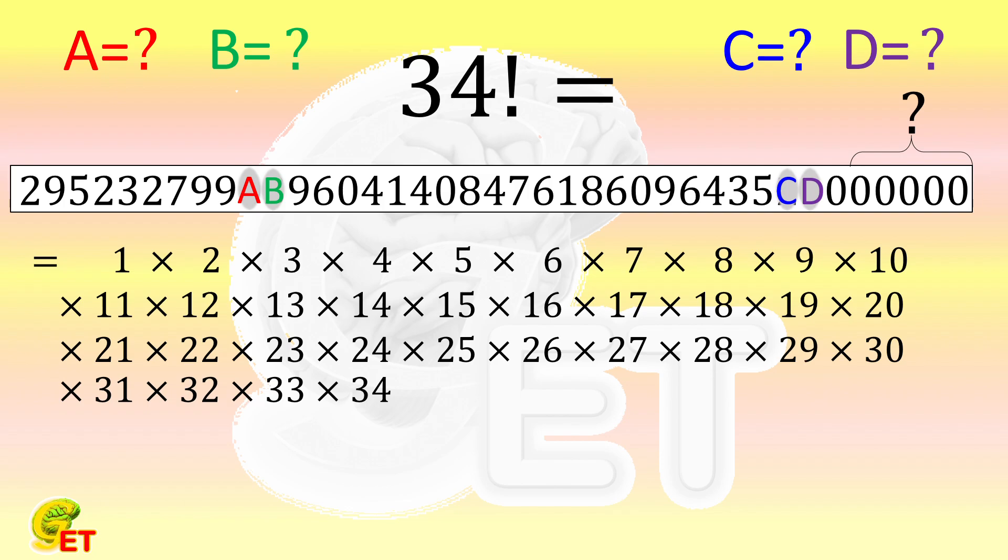Out of all the factors, for every pair of 2 and 5, there is one 0 correspondingly at the end. Of this number, the amount of factor 2 is much bigger than the amount of factor 5, which means that there will be enough factor 2. So we just need to count the amount of factor 5.